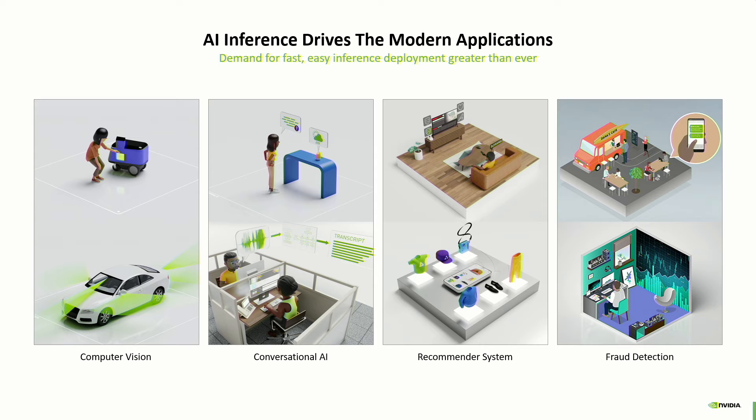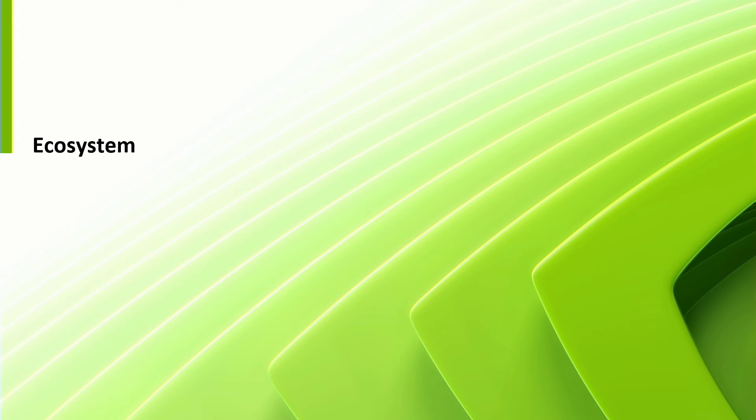AI inference drives modern applications. Computer vision inference is used in self-driving cars and robots. Conversational AI is a big thing nowadays with ChatGPT. Recommender systems — when you go online and they say 'buy this thing' — that's AI inference. Or when you use your credit card and get flagged for a fraudulent transaction, a lot of that is done with AI inference.